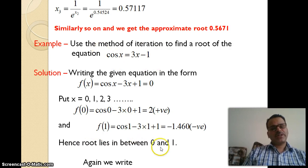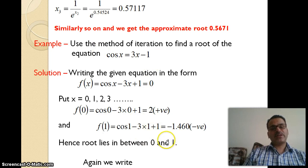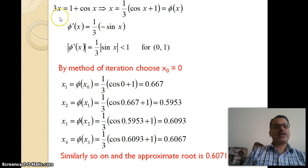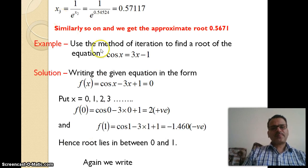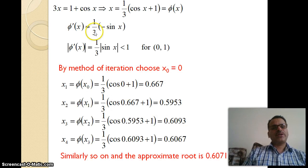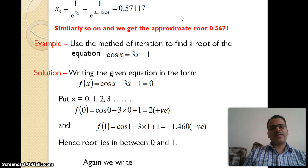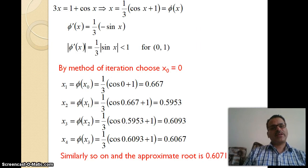Now we use the method of iteration. We don't use the interval but need to find one initial guess value. First, we write the function as φ(x). From cos x = 3x - 1, we get 3x = 1 + cos x, so x = (1 + cos x)/3. This is our φ(x) function: φ(x) = (1 + cos x)/3.